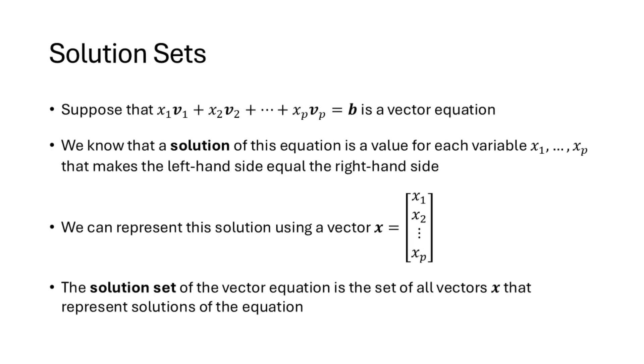Remember that we've been talking about vector equations that have the form x1 times v1 plus x2 times v2 plus plus plus xp times vp equals b. Now a solution of that vector equation is a value for each variable x1 through xp that makes the left-hand side equal the right-hand side. We can collect those values into a vector and think about the solution set of the vector equation, which is all vectors x that represent solutions of this equation.